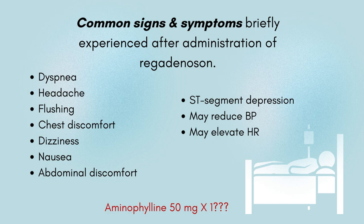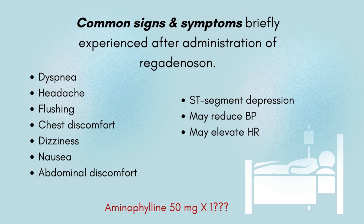Continuously monitor the EKG and blood pressure for up to five minutes or more if needed. Hemodynamic effects typically seen are lowering of the blood pressure and mild elevation in heart rate. You may see transient ST depression. These are all normal signs and will usually go away in about two to three minutes due to its very short half-life. For severe and persistent symptoms, IV aminophylline can be administered as a reversal agent to counteract the effects of regadenosin, including severe hypotension, development of symptomatic persistent second degree or complete heart block, other significant cardiac arrhythmia, wheezing, or severe chest pain associated with ST depression of two millimeters or greater.